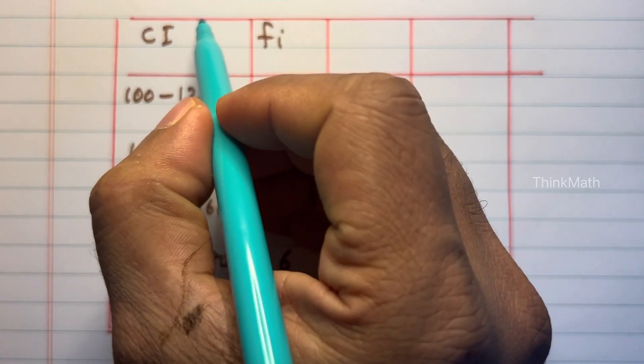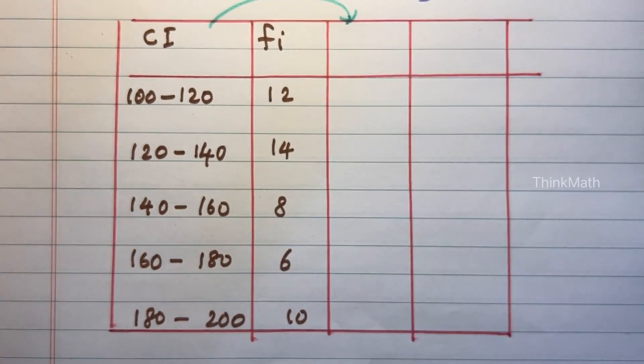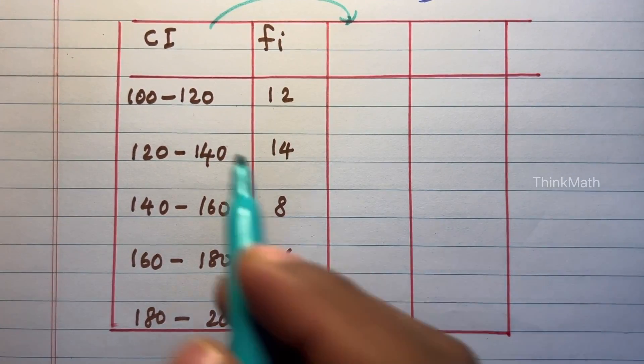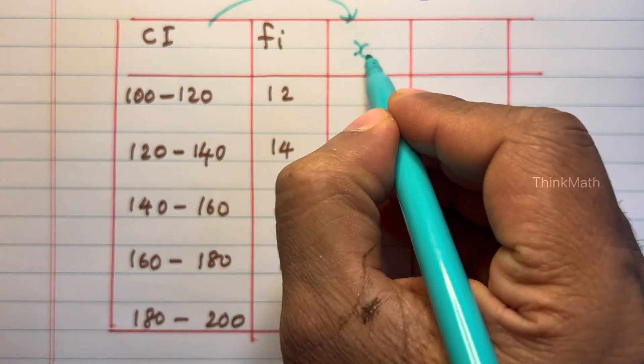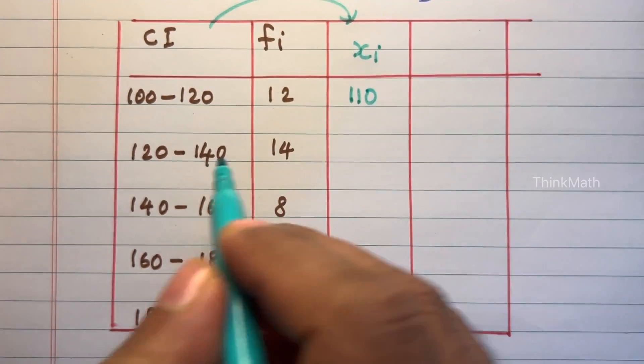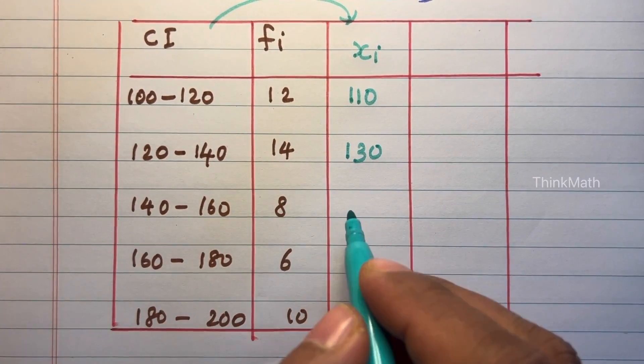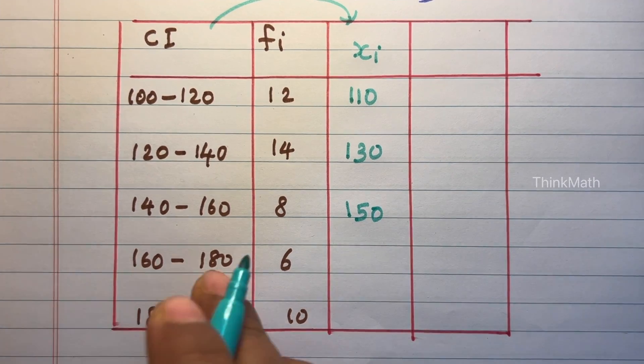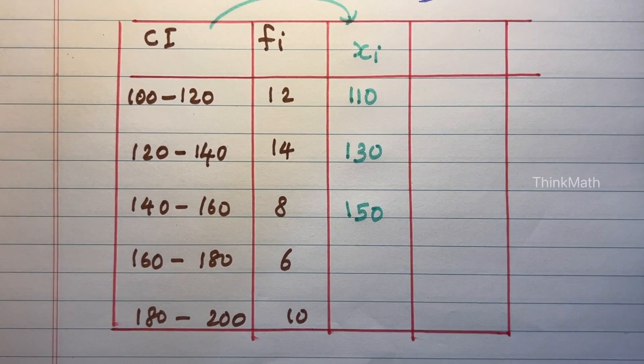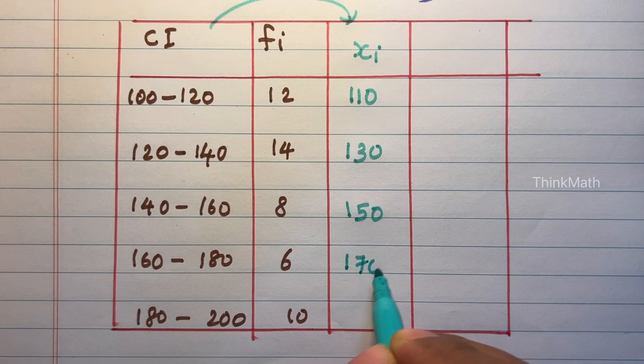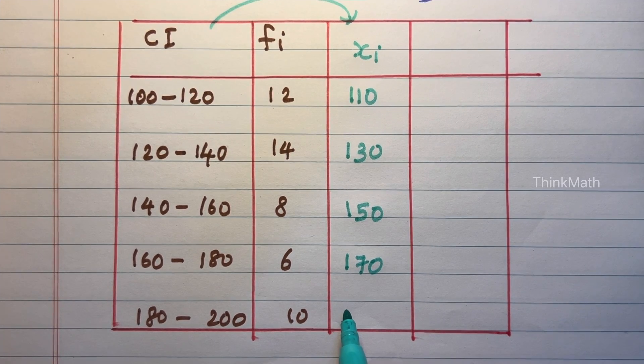So find the mid value of each class interval. 100 to 120 is 110, 120 to 140 is 130, 140 to 160 is 150, 160 to 180 is 170, 180 to 200 is 190.